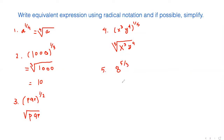For this one, the index is 3, so the bottom number is always the index. We can write it as the cubic root of 8 to the power 5. The cubic root of 8 is equal to 2, and 2 to the power 5 is 32.